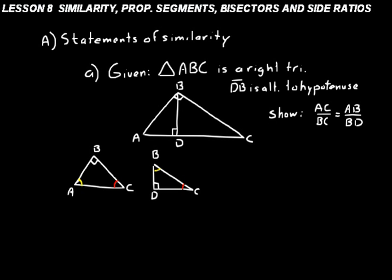This is how we need to write it: triangle CBA is similar to — we don't use the congruent symbol because they aren't congruent, just the tilde mark which means similar to — CBA is similar to CDB. We have to do them in that order. That corner at C, that vertex is the same for both and has the same angle. At B on the triangle on the left and D on the triangle on the right, those two vertices are similar — they're both 90 degrees. That's why we write them in that order.